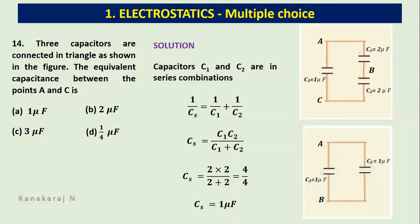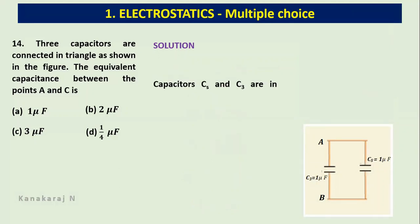Now with this circuit, we will understand that C3 and Cs form a parallel combination. So let us work out that. Capacitors Cs and C3 are in parallel combination. So the effective capacitance will be a very simple addition of these two capacitors: Cs plus C3. So the value of C3 is 1 and Cs will be again 1. So 1 plus 1, Cp equals 2 microfarad.